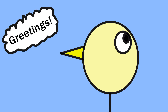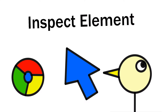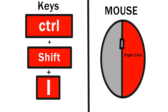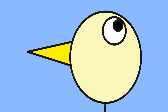Greetings, this is Billy the Ostrich with Inspect Element. To access Inspect Element, you need to first have Google Chrome open. If you don't have Google Chrome, install it. It's a good browser, you'll thank me later. Now to access it, you need to either press Control-Shift-I or simply right-click on your mouse. Now that you know how to access Inspect Element, let's go do some fun things with it.